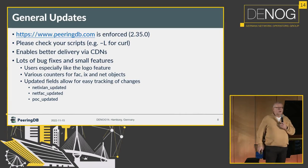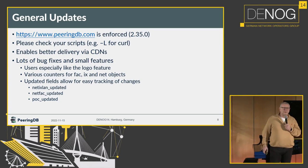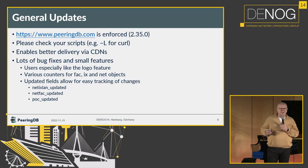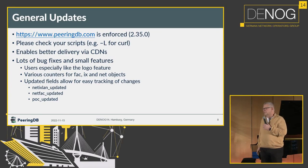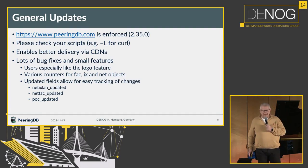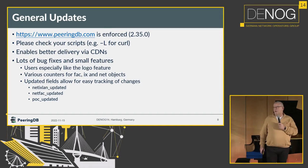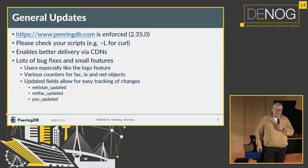We did a lot of general updates in release 2.35. We changed the canonical URL from peeringdb.com to www.peeringdb.com, and unfortunately this broke a lot of scripts because the API does not have redirect implemented, so scripts would have failed.